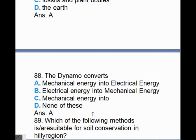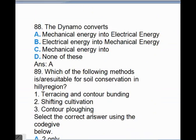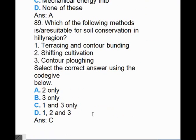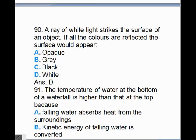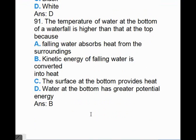Which of the following methods is suitable for soil conservation in hilly region? The answer is C, i.e., 1 and 3. A ray of white light strikes the surface of an object. If all the colors are reflected, the surface will appear, answer is D, white.